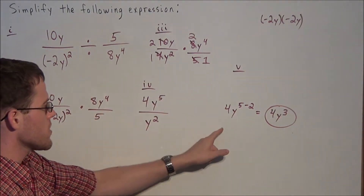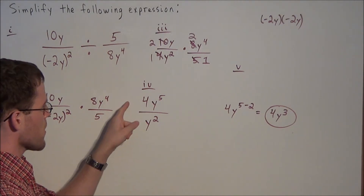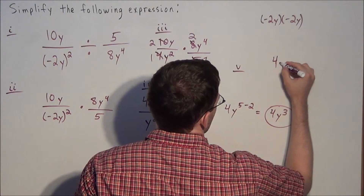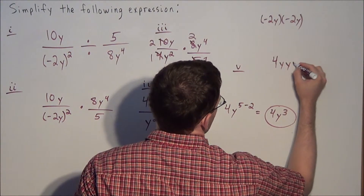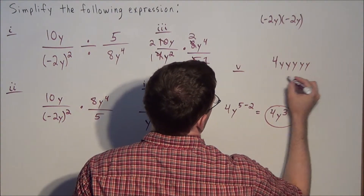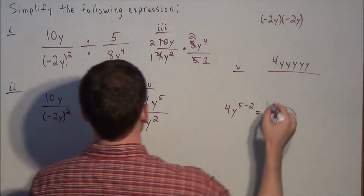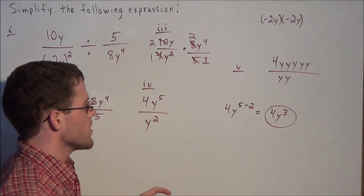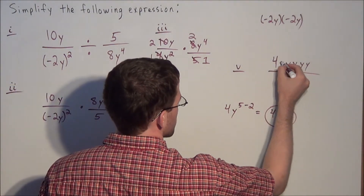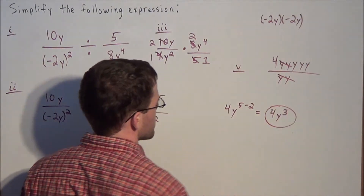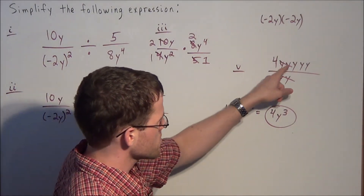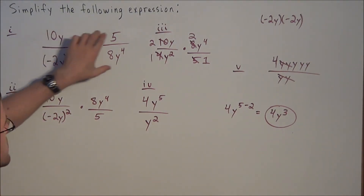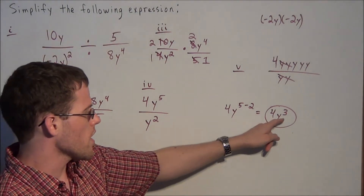To illustrate how this property works: 4y to the 5th is 4 times y times y times y times y times y, over y squared which is y times y. The two y's cancel from the numerator and denominator, leaving 4 times y times y times y, which is 4y to the 3rd. So this is how we simplify this expression — the answer is 4y to the 3rd.